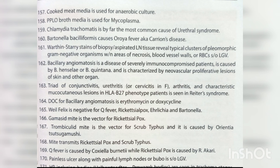Bacillary angiomatosis is a disease of severely immunocompromised patients caused by Bartonella henselae or Bartonella quintana, characterized by neovascular proliferative lesions of skin and other organs. The triad of conjunctivitis, urethritis/cervicitis, arthritis, and characteristic mucocutaneous lesions in HLA-B27 phenotype patient is seen in Reiter's syndrome. Drug of choice for bacillary angiomatosis is erythromycin or doxycycline. Weil-Felix is negative for Q fever, rickettsial pox, early Ehrlichia, and Bartonella.